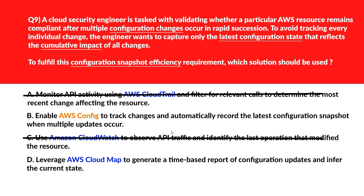Option C says: use Amazon CloudWatch to observe API traffic and identify the last operation that modified the resource. CloudWatch monitors metrics and events but doesn't retain structural configuration snapshots. Let's eliminate it. Option D says: leverage AWS CloudMap to generate a time-based report of configuration updates and infer the current state. CloudMap maps service discovery data and lacks features to track and store resource configuration. Let's eliminate it. Option B is the right answer.